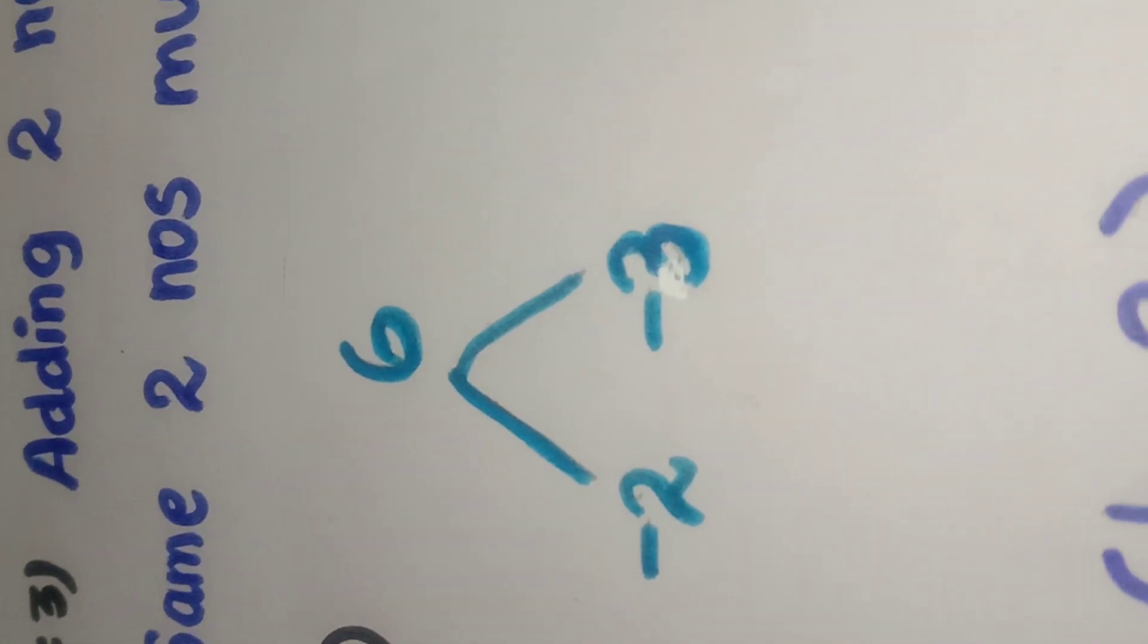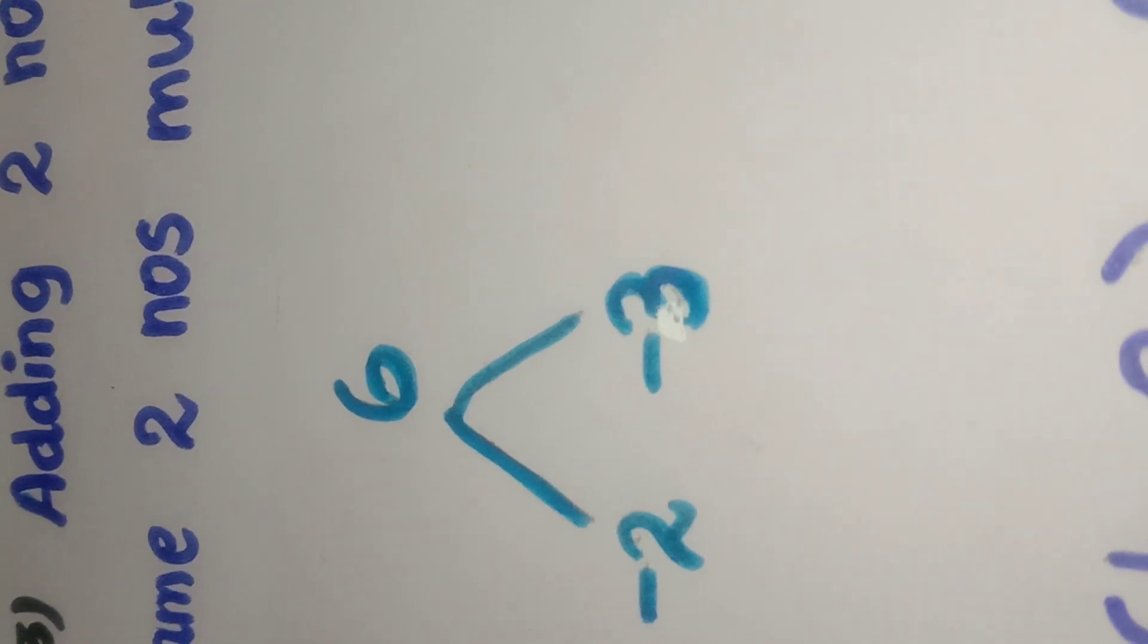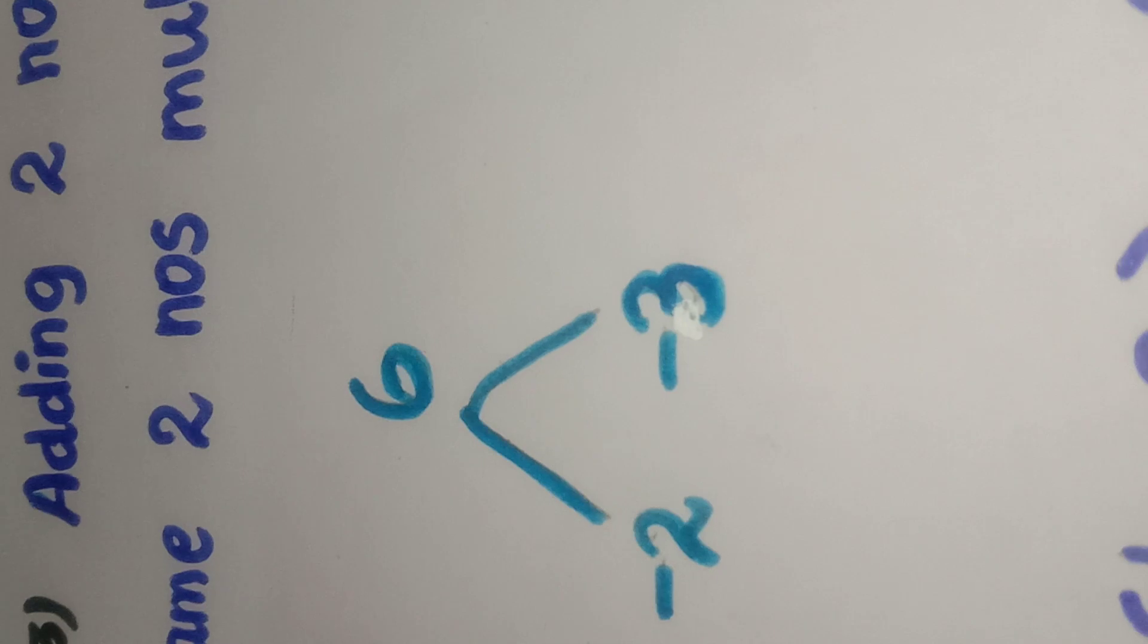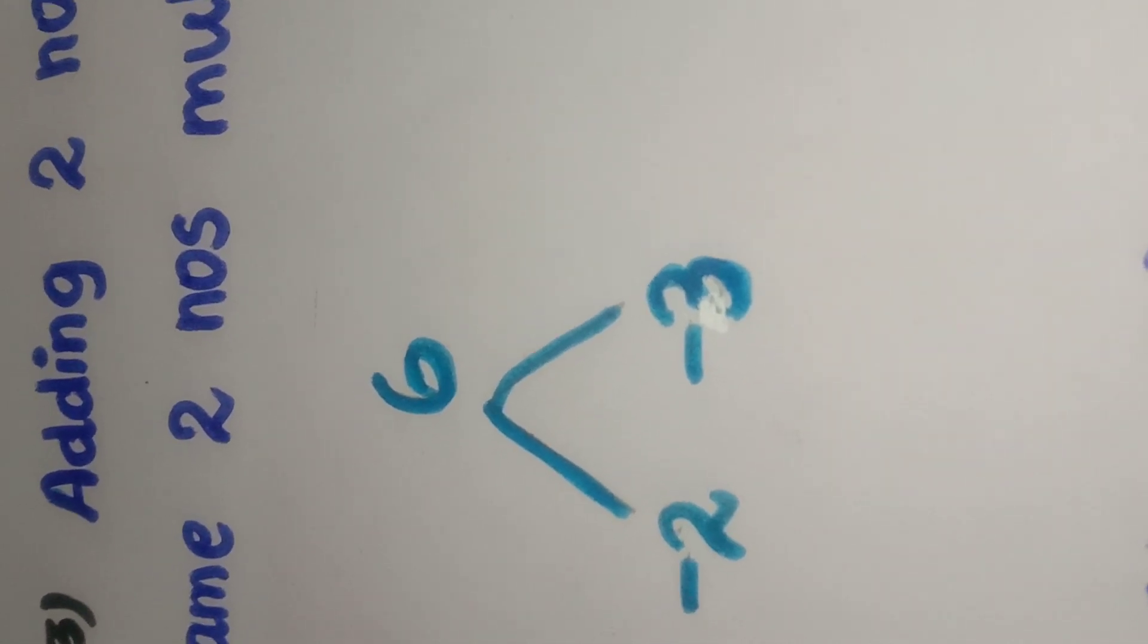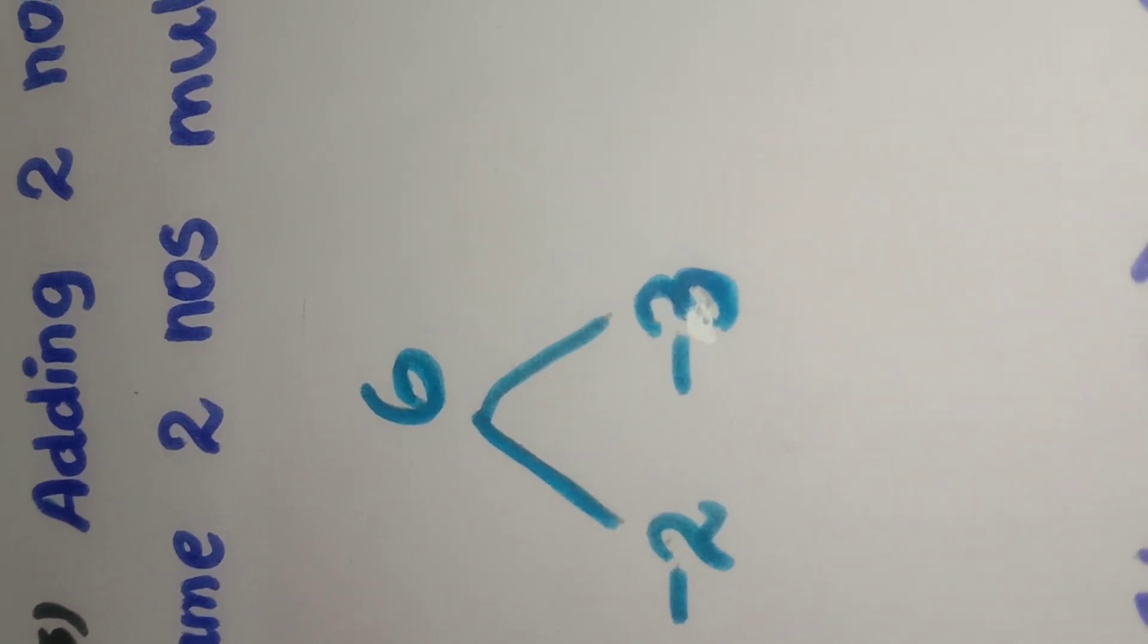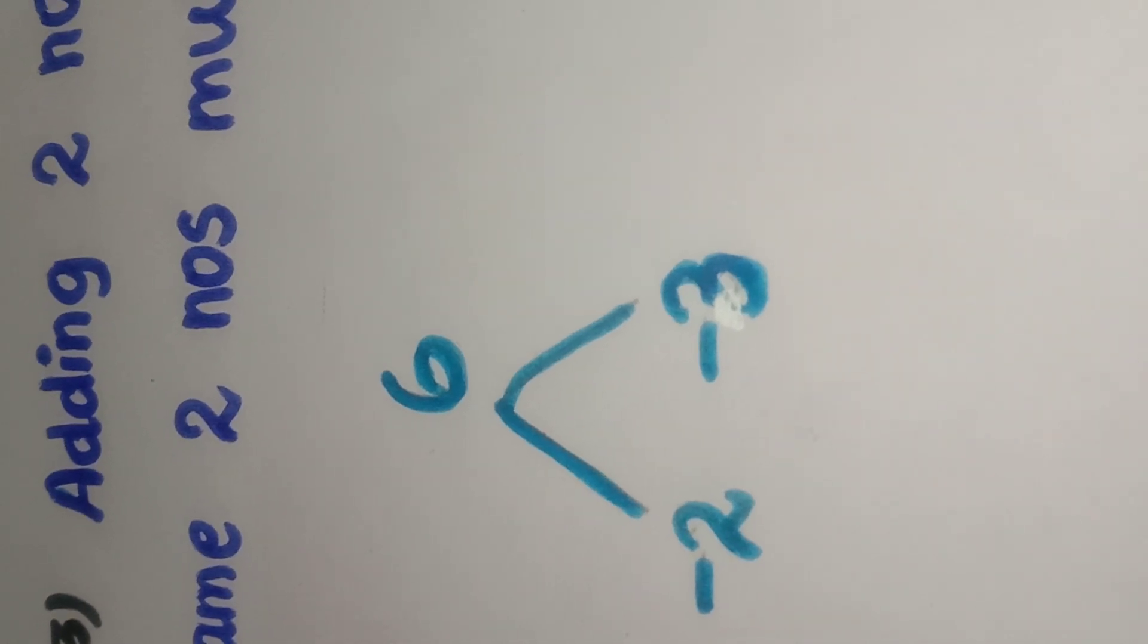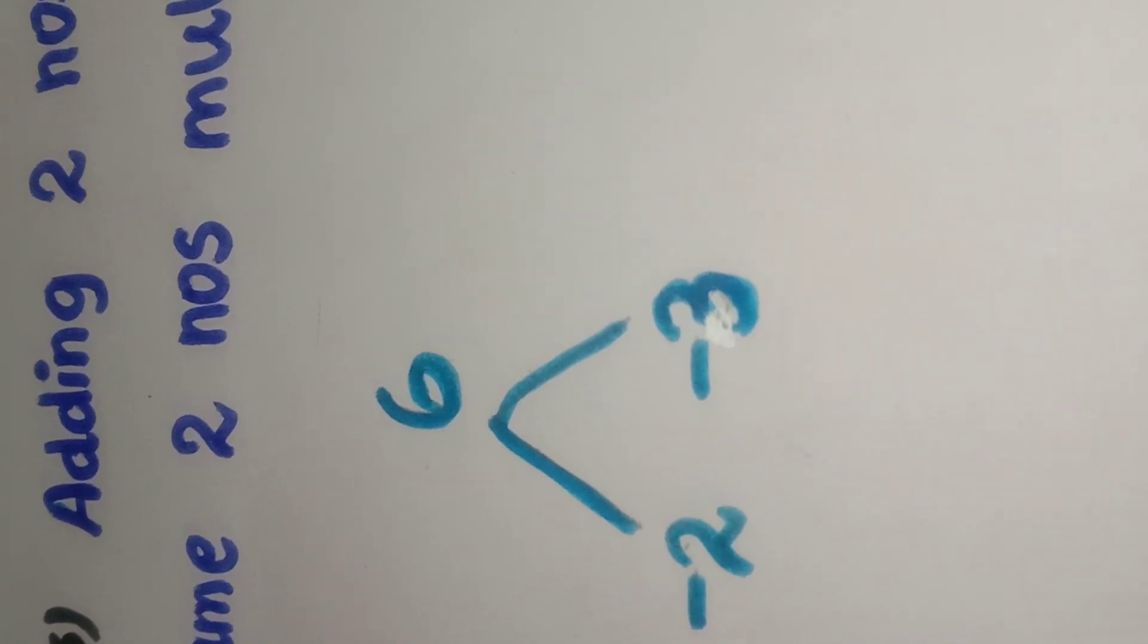6 can be written as minus 2 into minus 3. Here minus into minus is plus 6. So minus 2 into minus 3 is equivalent to plus 6. Multiplying the two numbers, we are getting 6.